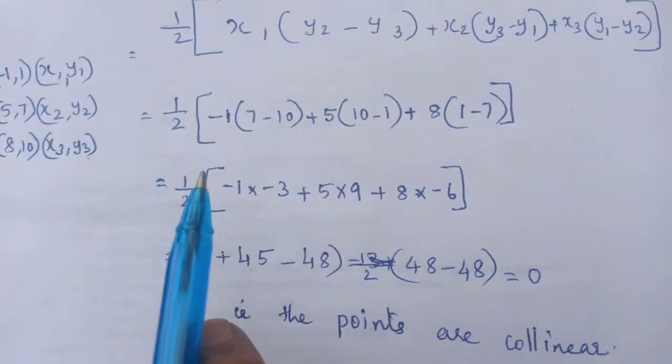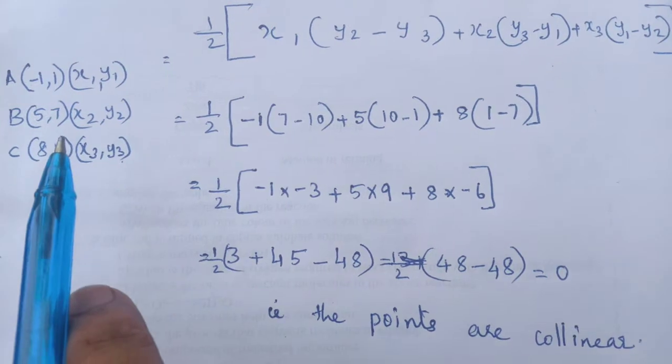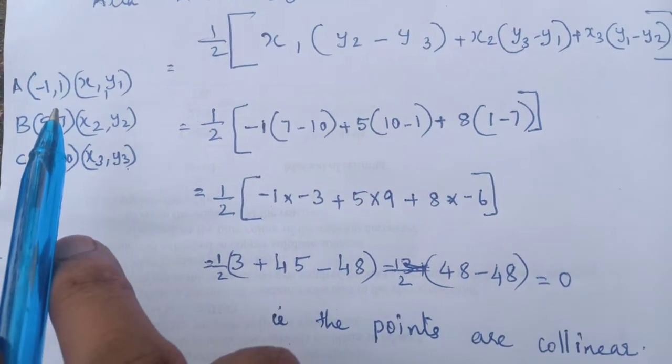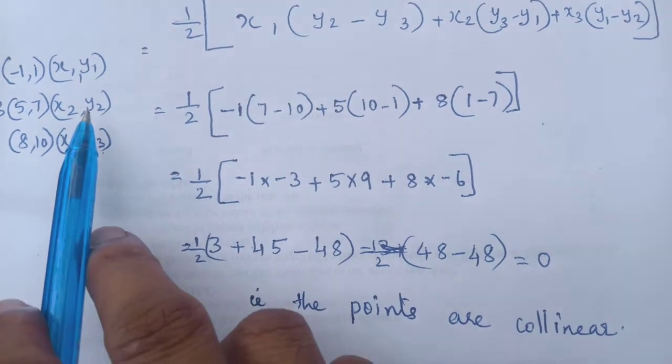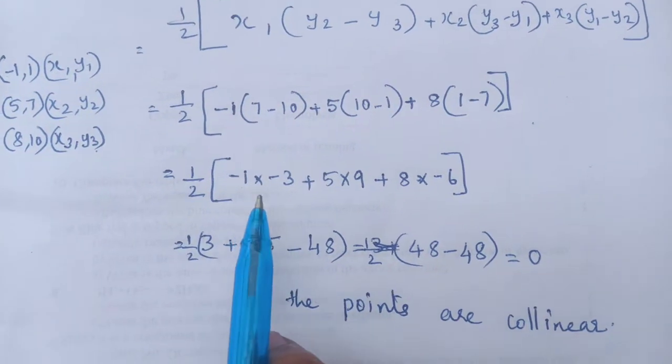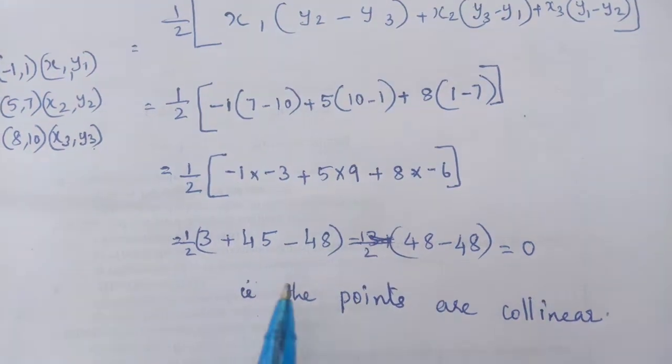Then after that you have to substitute. Before that you have to take these points as A, B, C as x1, y1, x2, y2, x3, y3. Like these points you have to take into consideration. Then you have to substitute these points here.